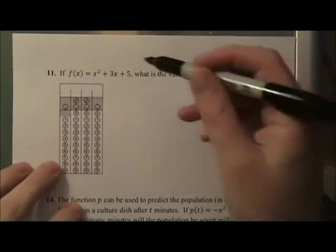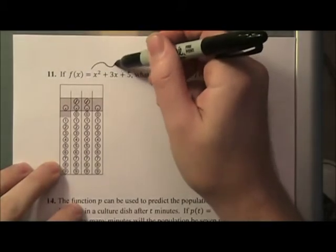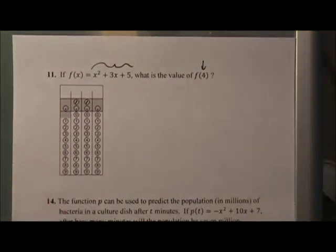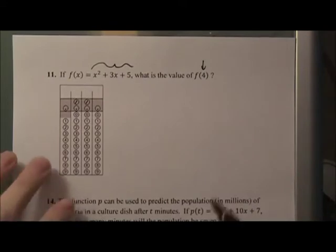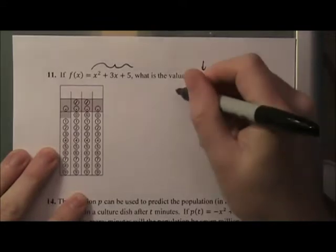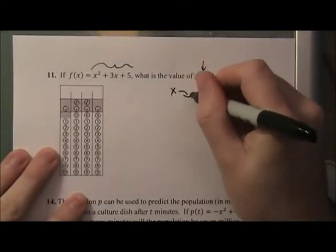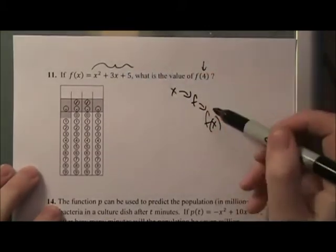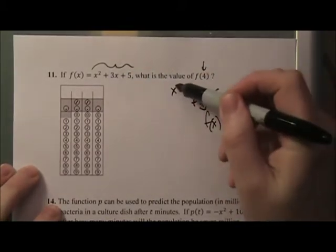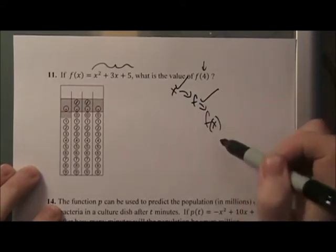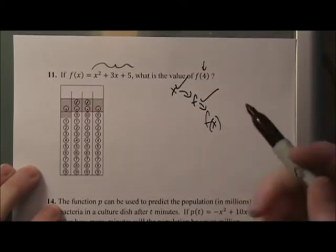They're basically saying here is the function and you know what the value of the function would be if you put in a 4. So this is an example of, if you look at the process, we have the input, we have the function, and we have the output. They're giving you the function and they're giving you the input. So this is a very common scenario: they're giving you an input, they're giving you the function, they want to know the output.